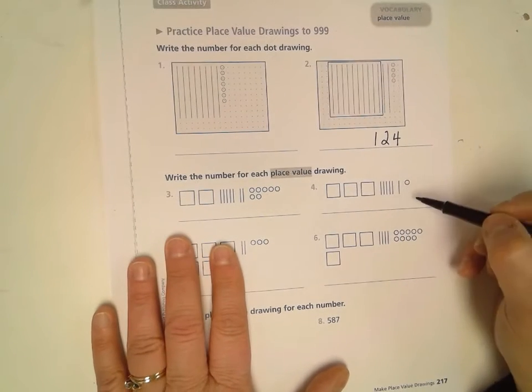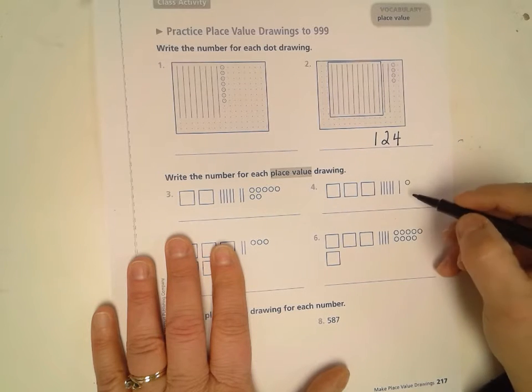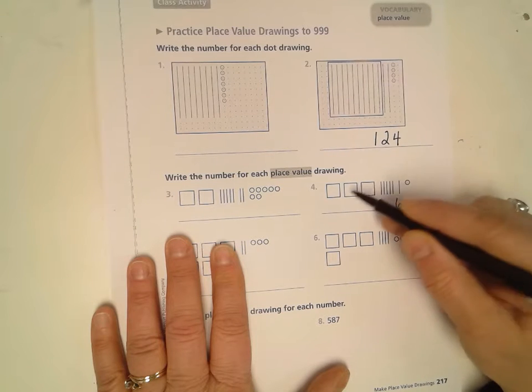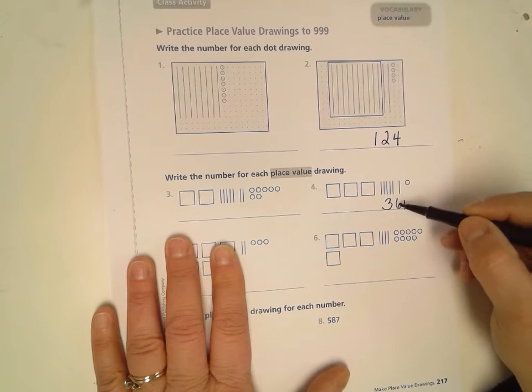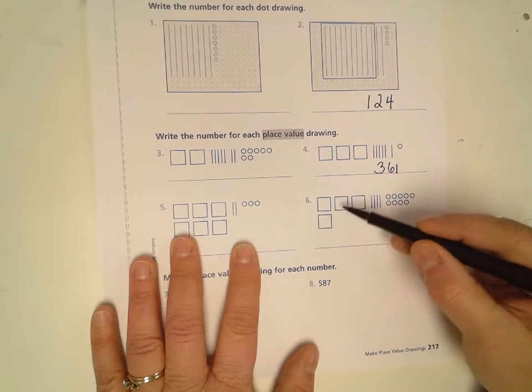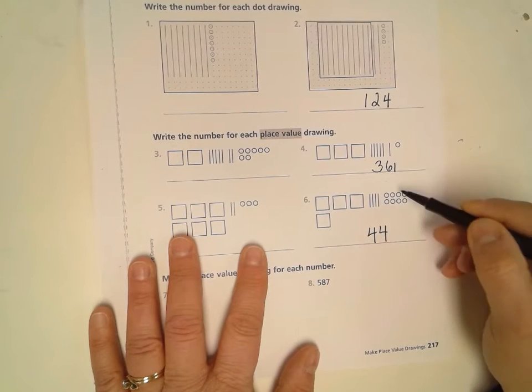Then we also are going to go to this one. We're going to do the same thing but these are using the actual sticks and dots and blocks. So one in the ones column, six tens, and three hundreds. Three hundred sixty-one.